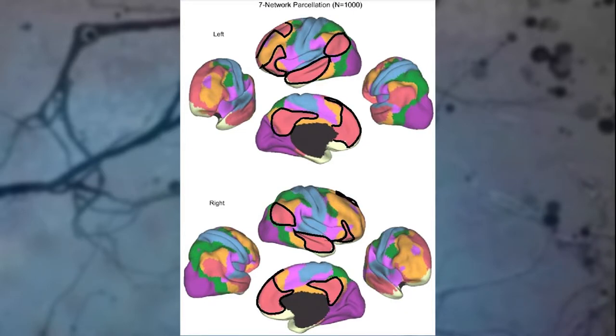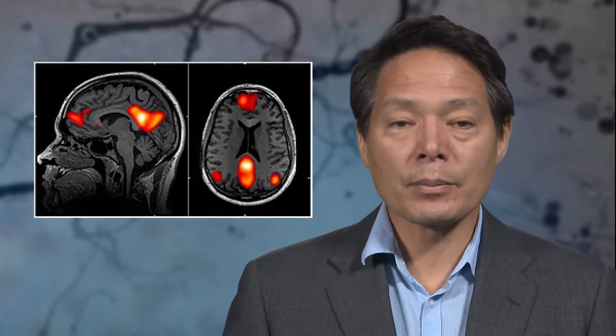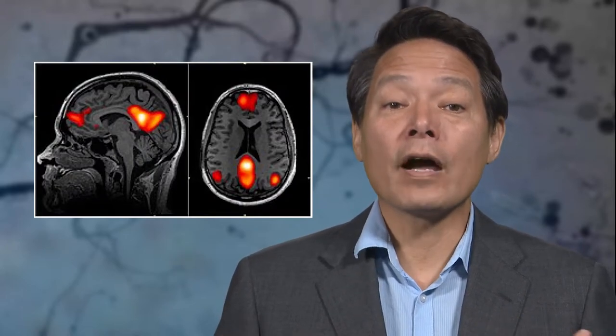This is sometimes called the default mode network because a neuroscientist named Marcus Raichle noticed that it was activated when people were not doing a task in the fMRI scanner. Here's another view of the default mode network. You might ask why these brain areas co-vary in their activity.